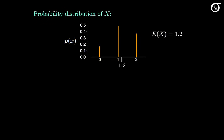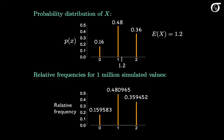Now I'm going to carry out a quick simulation to illustrate a point. I'm going to simulate 1 million values from this distribution — where the probability of getting a 0 is 0.16, the probability of getting a 1 is 0.48, and the probability of getting a 2 is 0.36. Here's a relative frequency histogram of those 1 million simulated values. The observed proportions of 0s, 1s, and 2s are very close to the probabilities, as we'd expect. The average of those million simulated values is 1.199869, which is very close to the expected value of 1.2. The law of large numbers tells us that if we sample more and more values, their average converges to the expected value as the number of observations increases.